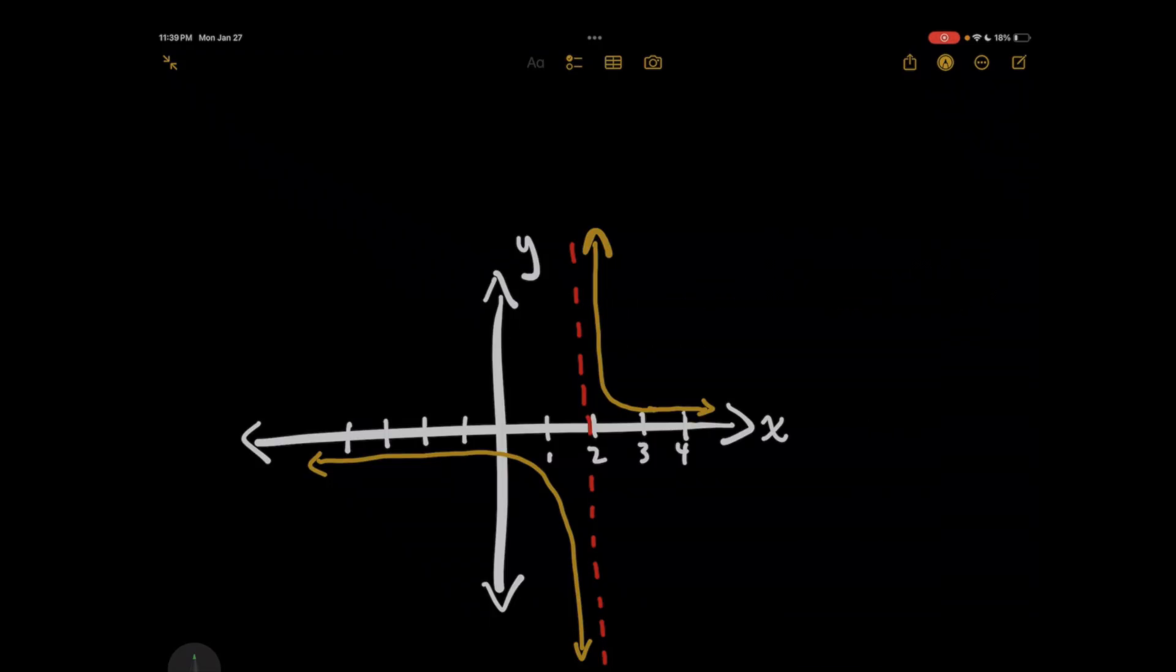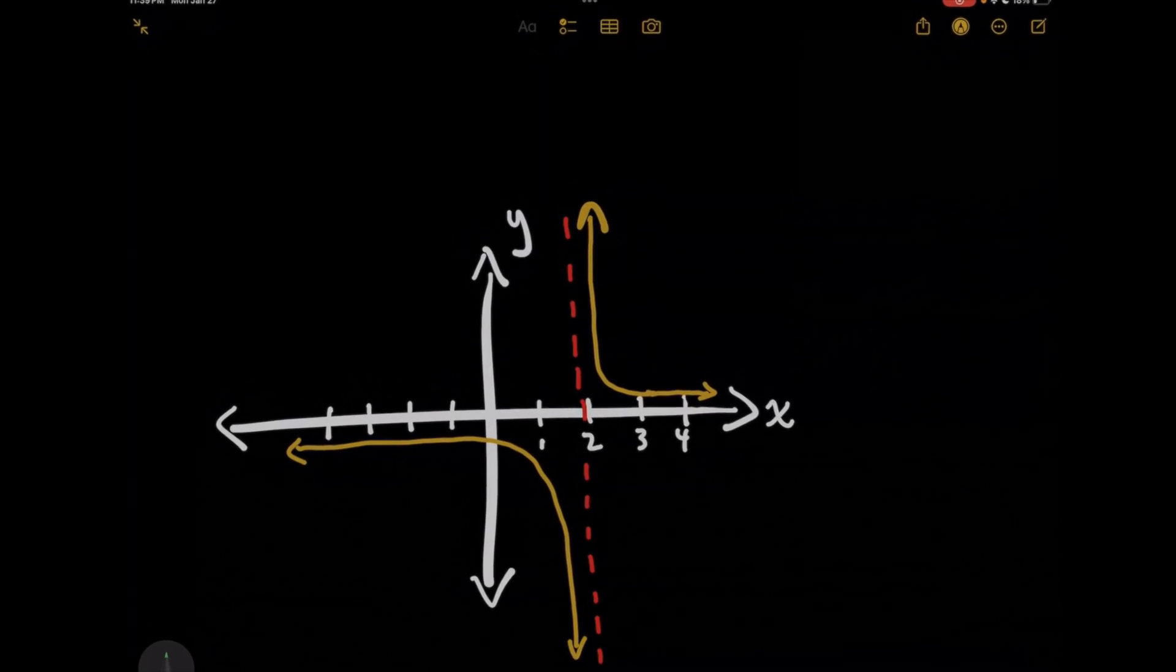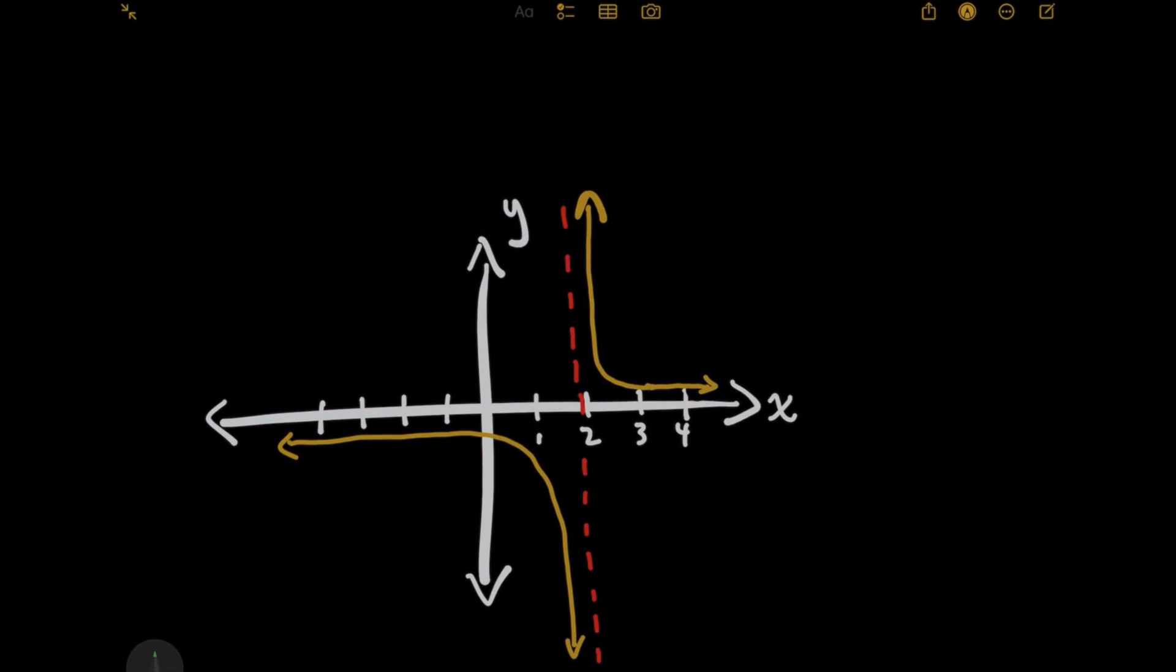And this asymptote at x equals 2 tells us that we have a domain restriction there because you can't plug in x equals 2 into the original function since you'd be dividing by 0. Now this is a problem for our definite integral from 0 to 3 because it includes this value of x equals 2 in that region.